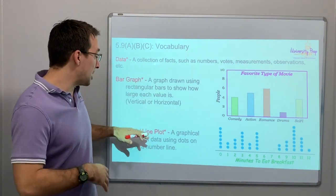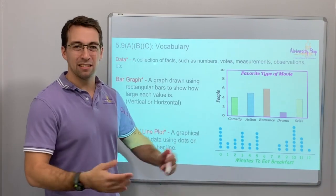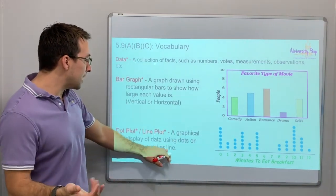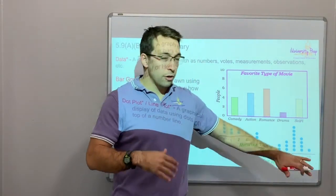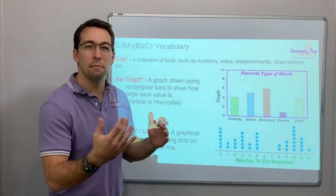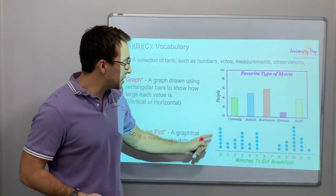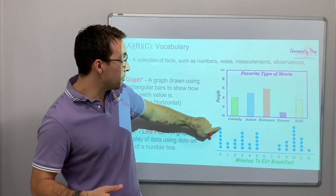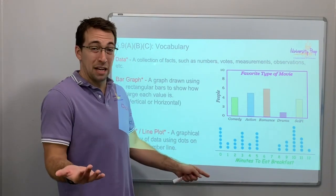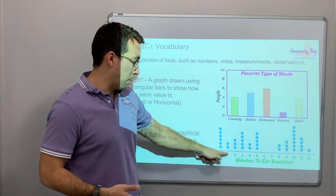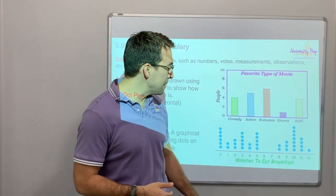Similar to a bar graph, a dot plot or a line plot — it's the same thing. Dot plots use dots and line plots use x's. It's a graphical display of data using dots on top of a number line. Maybe dot plots use the time of day, so instead of numbers they have times. Each dot represents the frequency on that number. So zero is way more frequent here — 'minutes to eat breakfast' — meaning all of these people don't eat breakfast. Zero minutes means they don't eat breakfast. Two people eat breakfast in one minute; maybe they're eating a Pop-Tart.